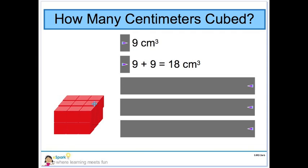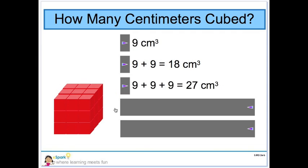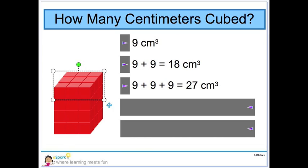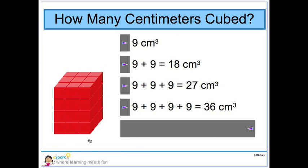Watch the prism get taller as we add more layers. Also, keep an eye on our addition equations. For each layer we add, we add one more addend of 9 and the sum increases by a multiple of 9. And our answer is always noted in centimeters cubed.